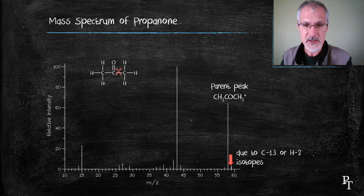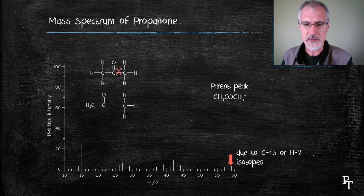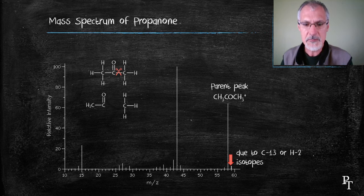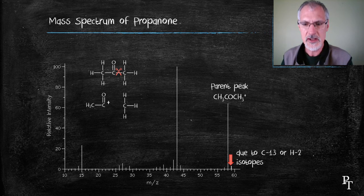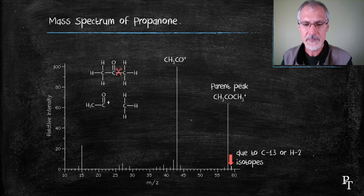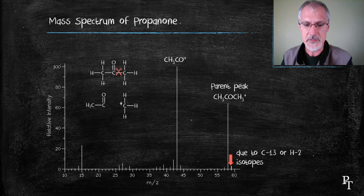If my propanone broke at the location indicated here, I would have these two fragments. If the fragment on the left developed a positive charge, I would end up with the peak that you see at 43. If the positive charge resided with the CH3 group, I would see a peak then at 15.